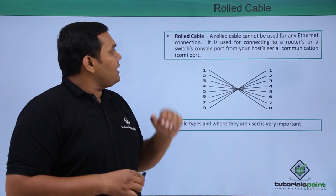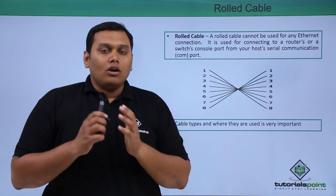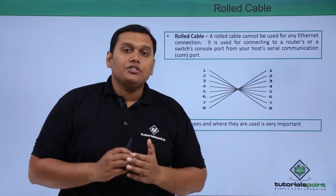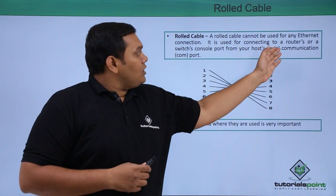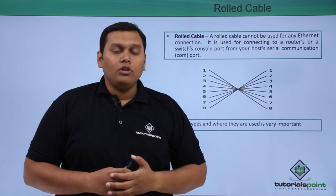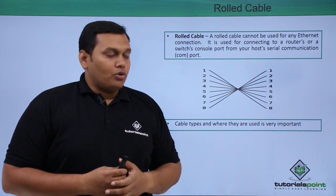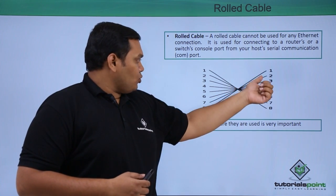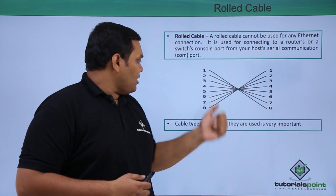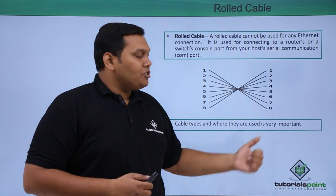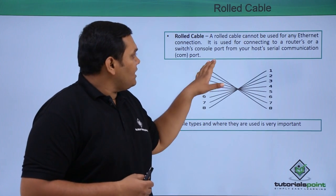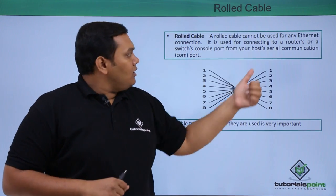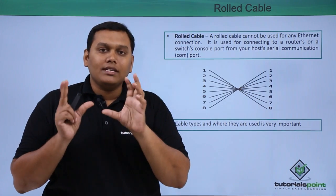A rolled cable cannot be used for any Ethernet connection because it is different from crossover and straight-through cables. It is used for connecting a router's or switch's console port to a host's serial communication port. In the pin mapping, 8 is connected to 1, 7 is connected to 2, and so on — all pins are reversed.